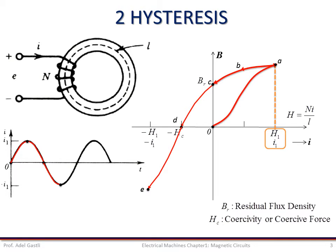For current minus I1, the flux density will correspond to point E. If H is now decreased to 0 and then increased to the value H1, the BH curve will follow the path EFGA'.